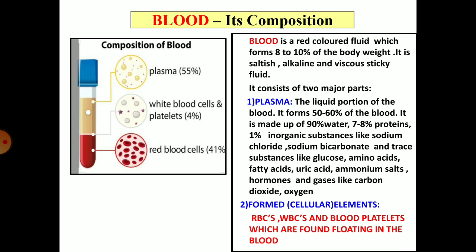Let us now study blood and its composition. Suppose you take out blood and put it in a test tube. After some time, you will see it looks like this: the lower portion consists of red blood cells and forms round about 41% of the total blood. Above that lies the WBCs and the platelets, round about 4%. And 55% is plasma, the yellow colored fluid on the upper side. Blood is the red colored fluid which forms round about 8 to 10% of the body weight. It is saltish to taste, alkaline, viscous, and a sticky fluid.